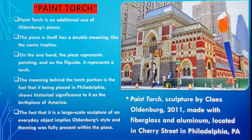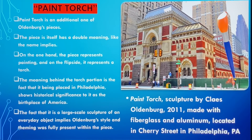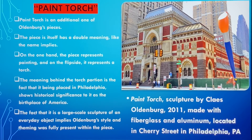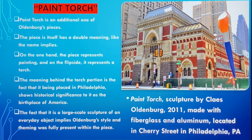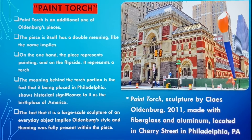The meaning behind the torch part is the fact that it was placed in Philadelphia, and the torch shows the importance and historical significance of it being located in the birthplace of America. The torch really shows a flame-like symbolism connecting with historical America. And once again, the fact that it's a large-scale sculpture of an everyday object implies his style, and his theming was completely present within this piece.